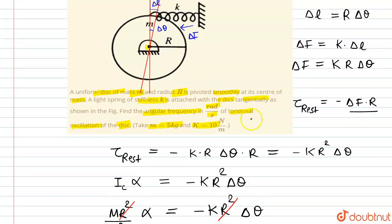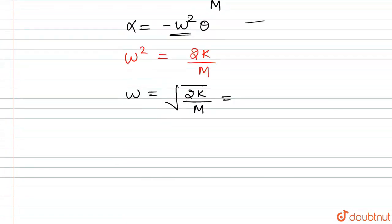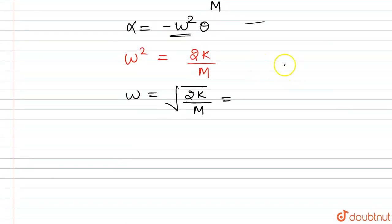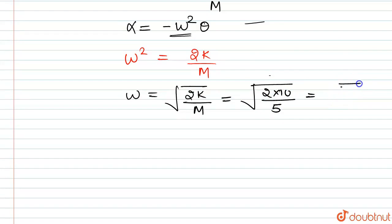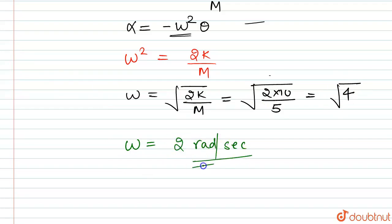The value of k is given as 10 N/m and mass is 5 kg. So omega = square root of (2 × 10 / 5) = square root of 4 = 2 radians per second. This is our required answer.